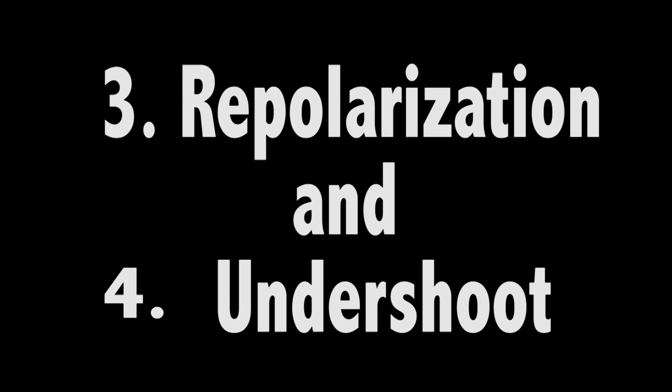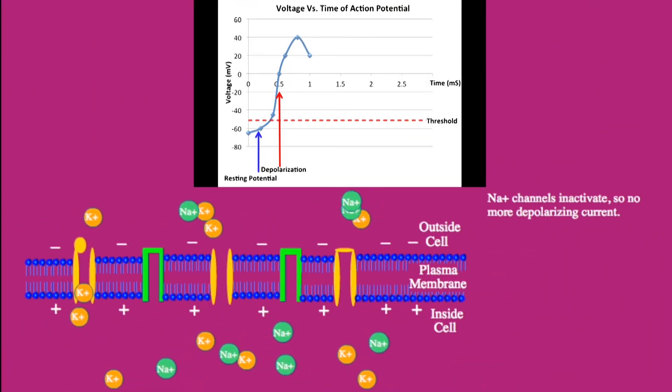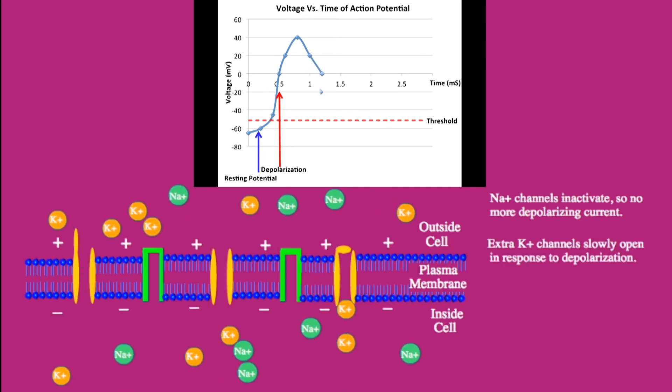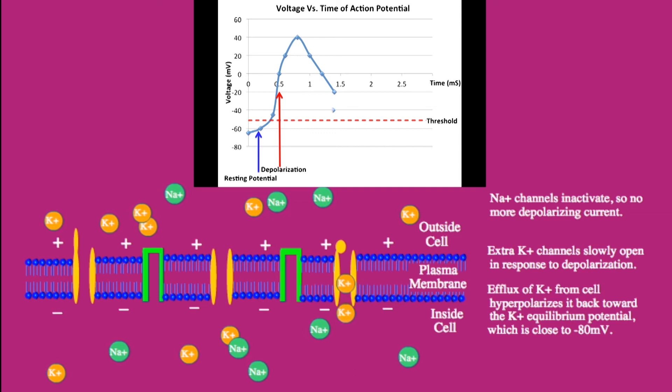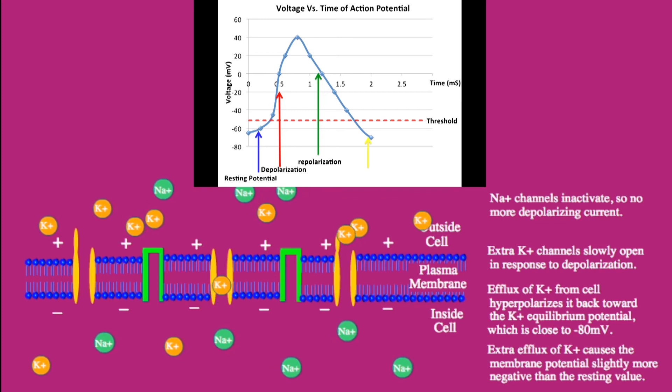Repolarization and undershoot. As the membrane potential approaches maximum depolarization, the sodium ion channels begin to close and less sodium ions cross the membrane. Extra potassium ion channels slowly open and potassium ions continue to diffuse out of the cell. The potential quickly returns to the potassium equilibrium potential of negative 80 millivolts.